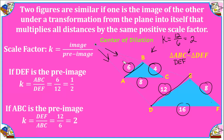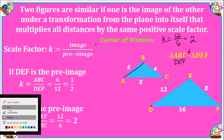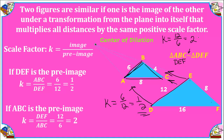Now let's go the other way. Let's say that our pre-image is triangle DEF and our new image is ABC — all of the points are being pulled toward the center of dilation. To identify the scale factor, you take a measurement of the new image such as 6 and compare it to the length of the pre-image 12. We simplify and get one-half as our scale factor, indicating the image is shrinking. Our scale factor is between zero and one.